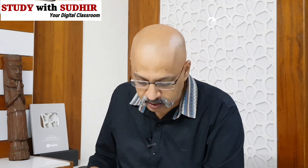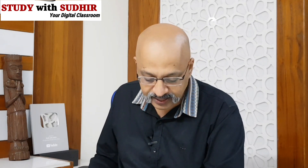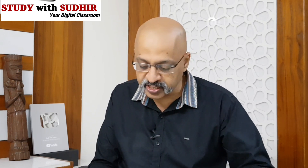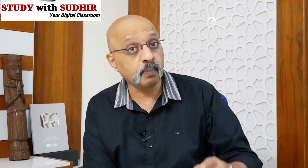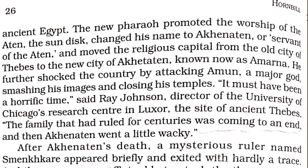Amenhotep III — Tut's father or grandfather — was a powerful pharaoh who ruled for almost four decades at the height of the 18th dynasty's golden age. His son, Amenhotep IV, succeeded him and initiated one of the strangest periods in ancient Egyptian history. The new pharaoh promoted the worship of the Aten, the sun disk, changed his name to Akhenaten, moved the religious capital from Thebes to the new city of Akhetaten (now known as Amarna), and attacked Amun, a major god, smashing his images and closing his temples.